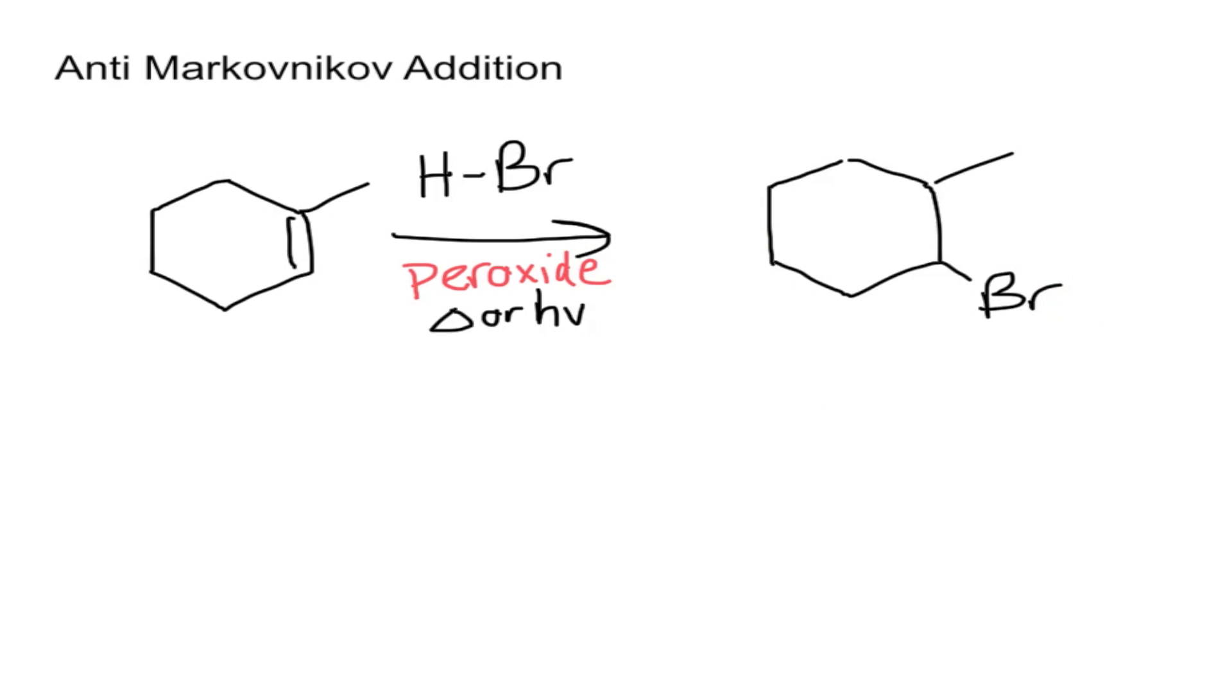it would add the bromine to the other side of the alkene, the other carbon. It's pretty important to remember that this only works with HBr. You can only add anti-Markovnikov with HBr only.